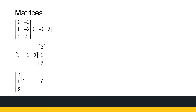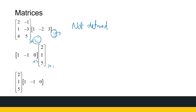A three by two matrix times a one row, three columns matrix: not defined, because the number of columns of the first matrix is not equal to the number of rows of the second. Next: one row, three columns times three rows, one column — I can multiply those. The result is a one by one matrix. This is very similar to finding the inner product, but it leaves me with a one by one matrix: two minus one plus zero is one.